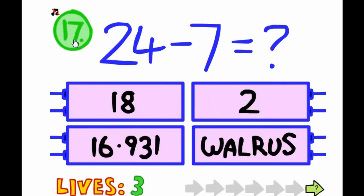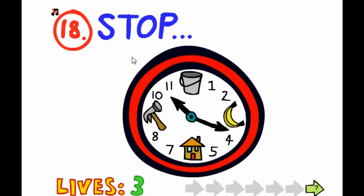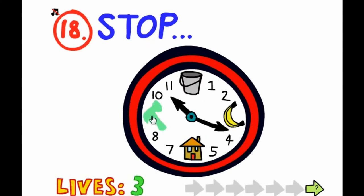Okay, so three more left. 24 minus 7. It's not a trick question guys. It's up left, right there. Click stop. See, hammer.